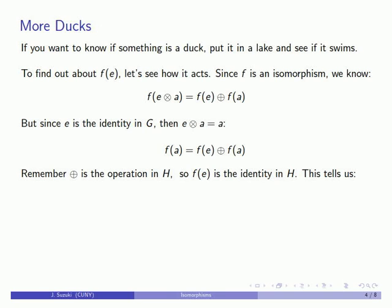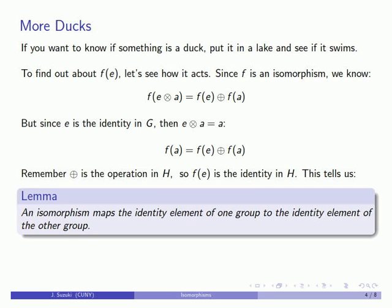This leads to an important result: an isomorphism must map the identity element of one group to the identity element of the other group.